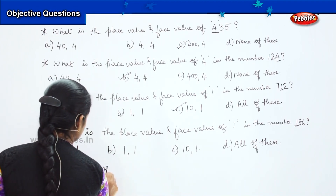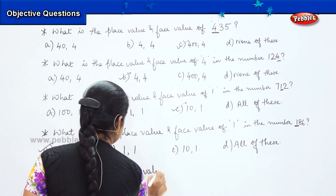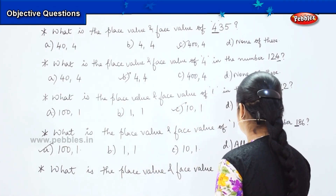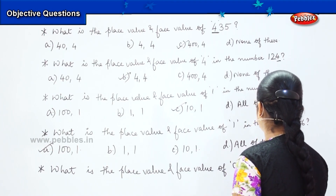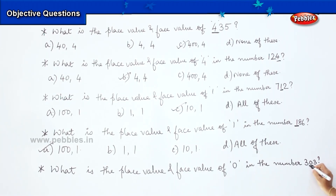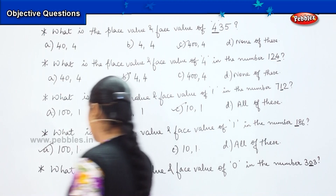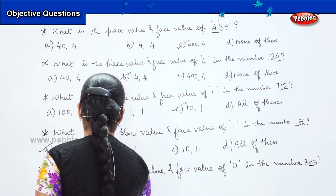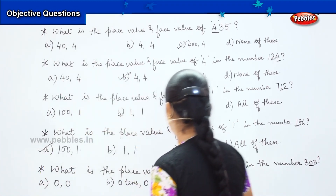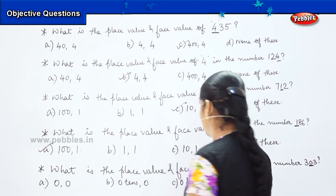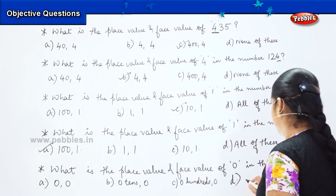Shall we do the last question of this pattern? You need to tell me the place value and the face value for the number 0 in the number 303. My options are: option A — 0 and 0; option B — 0 tens and 0; option C — 0 hundreds and 0; and option D — none of these.